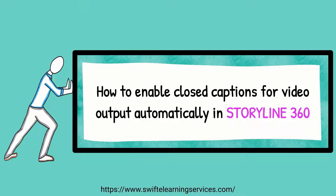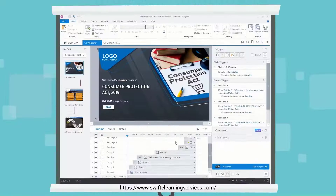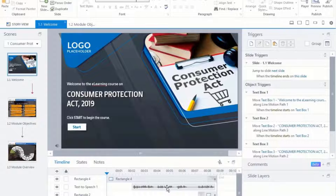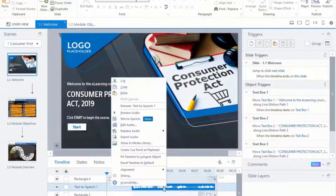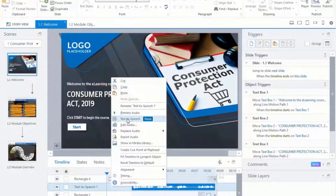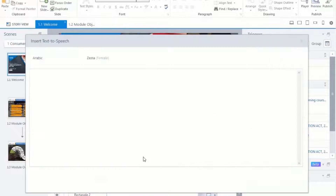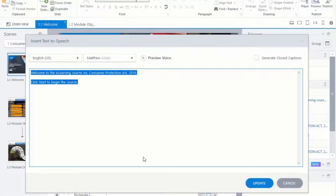How to enable closed captions for video output automatically in Storyline 360. Begin by right-clicking on the audio track. Choose the text-to-speech option, then select Generate Closed Captions.